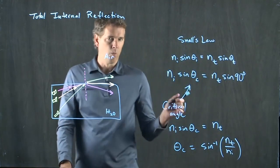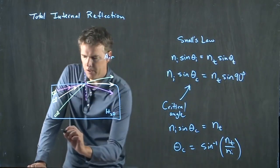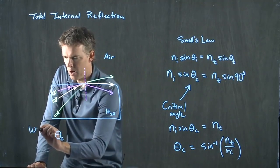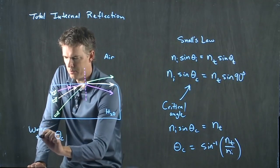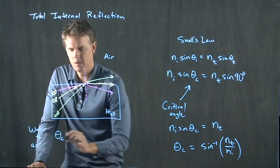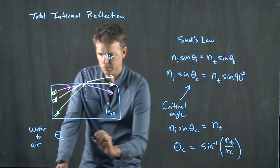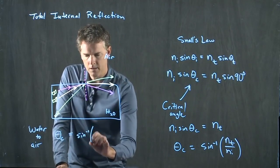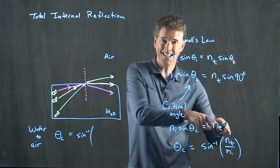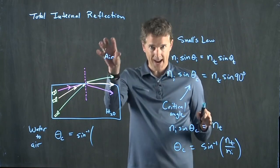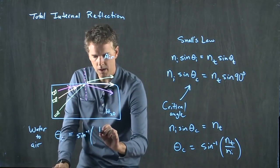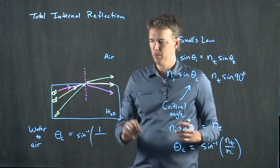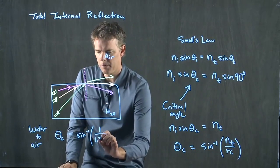If this is water and air, let's calculate what theta c is. And you guys punch it into your calculator. So we're going water to air. Theta c is equal to arc sine of nt. Remember, this is what it's transmitted into, which is air, so that is one. And n i is what it came from, which is water, 1.33.